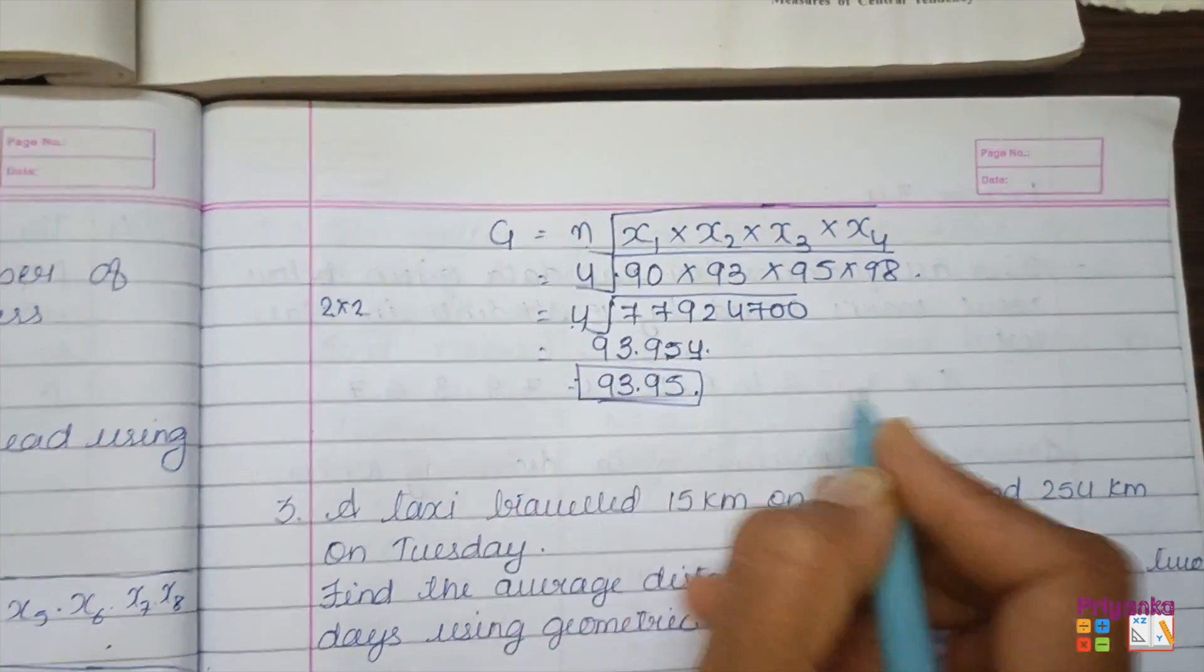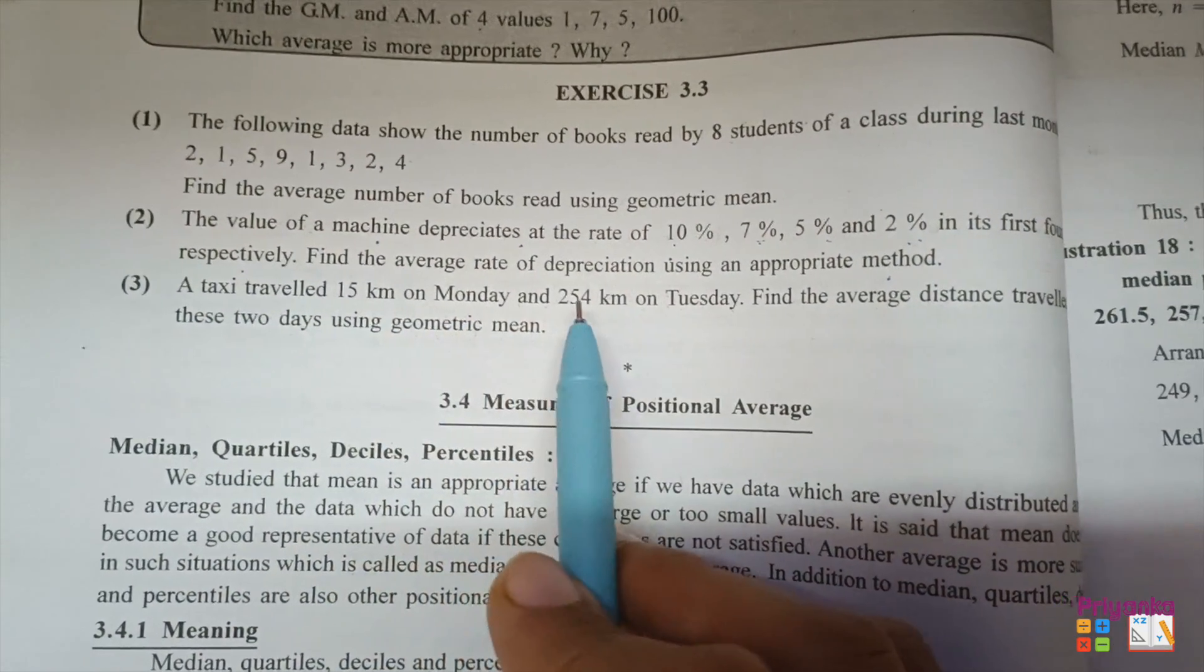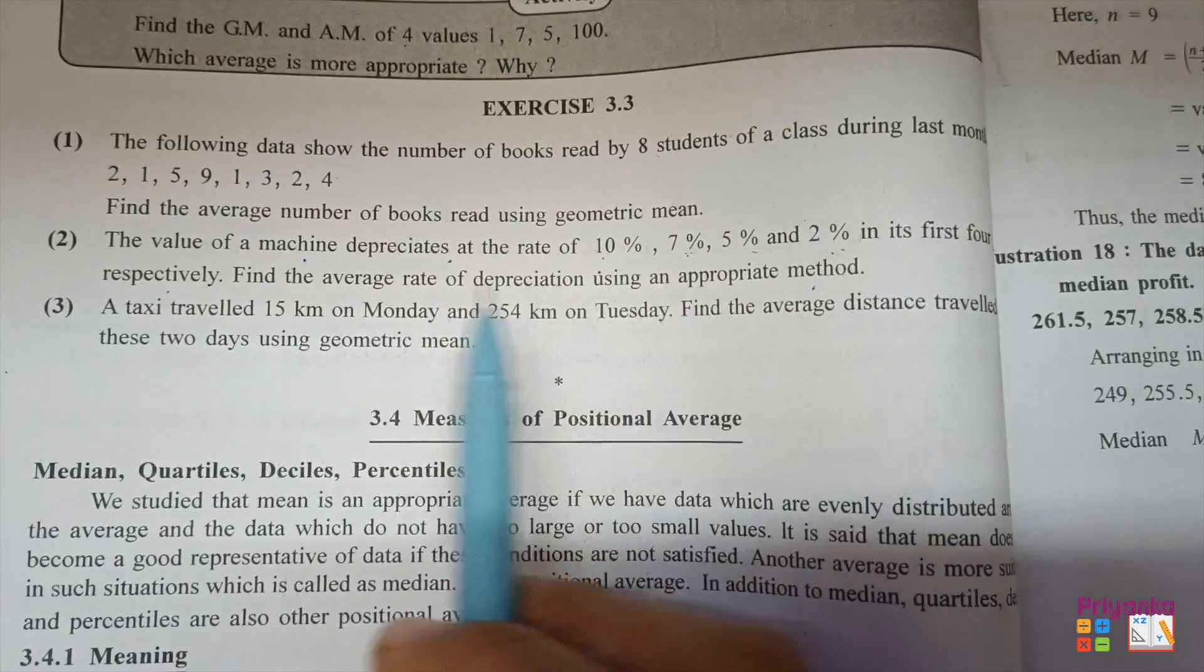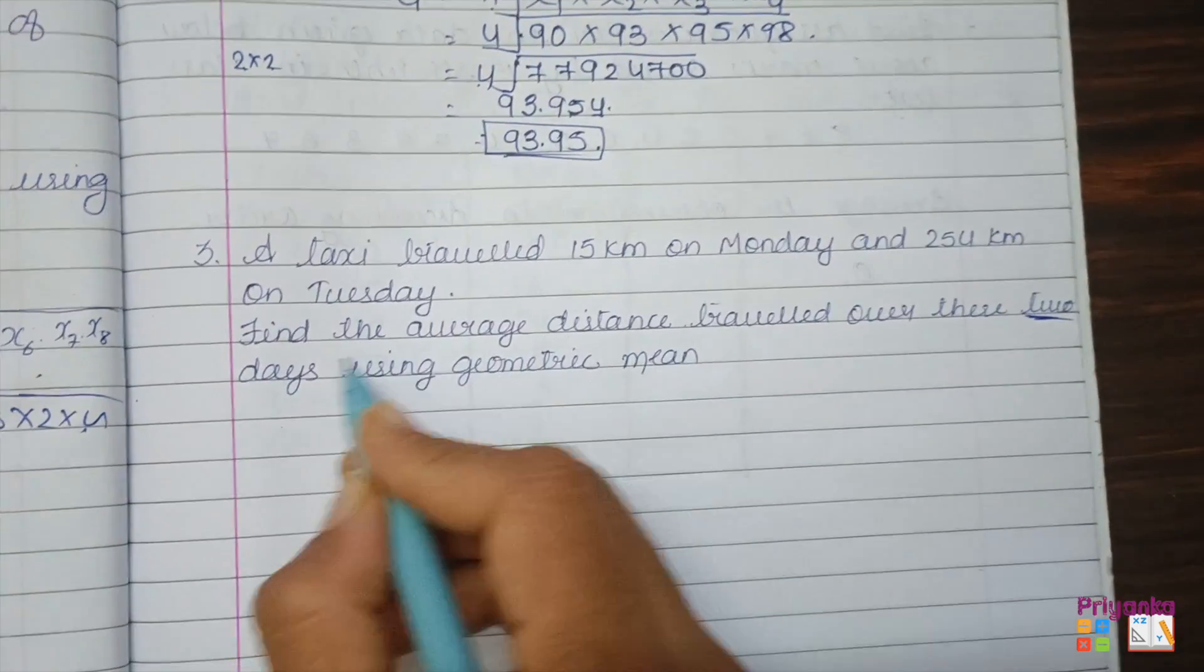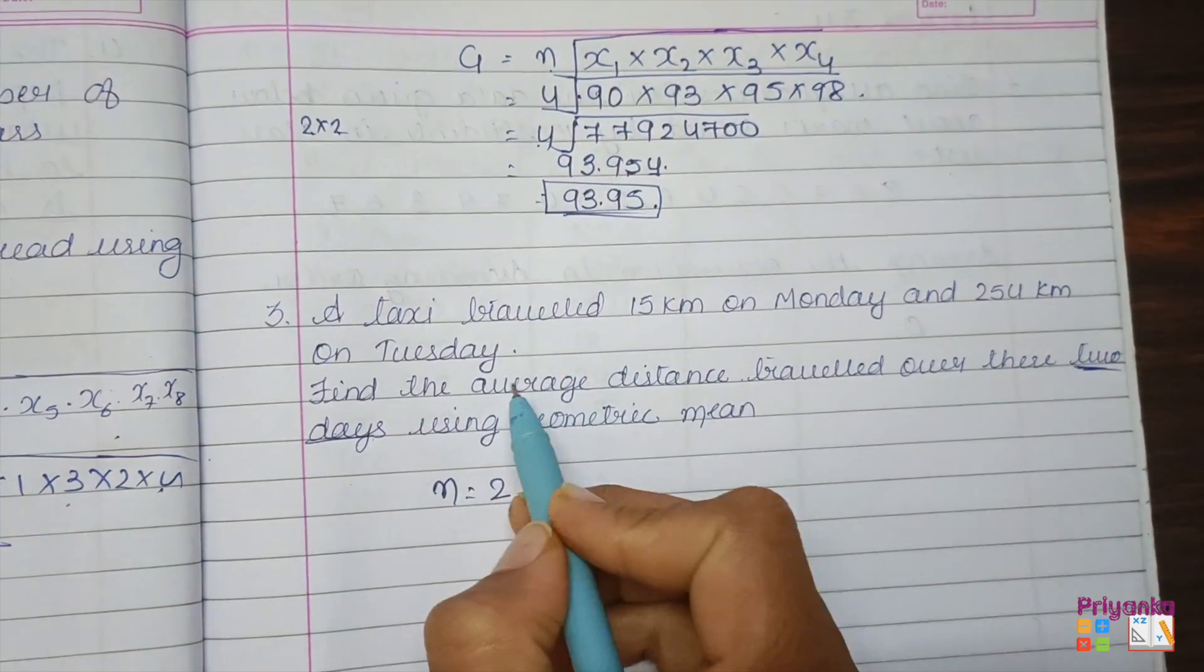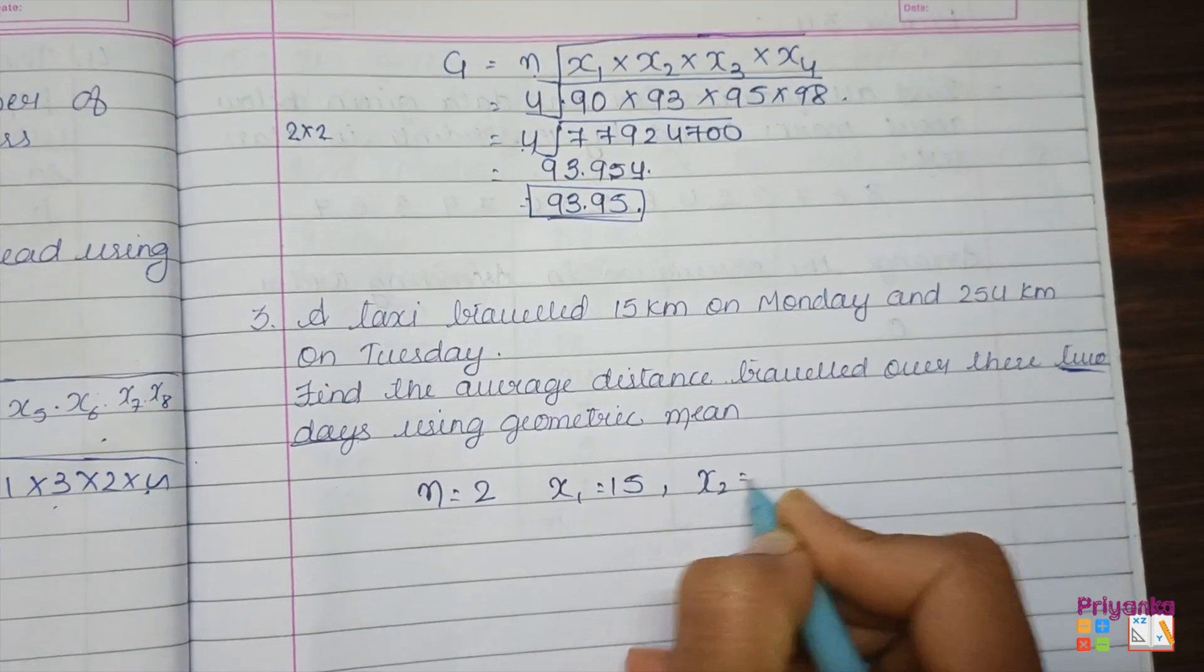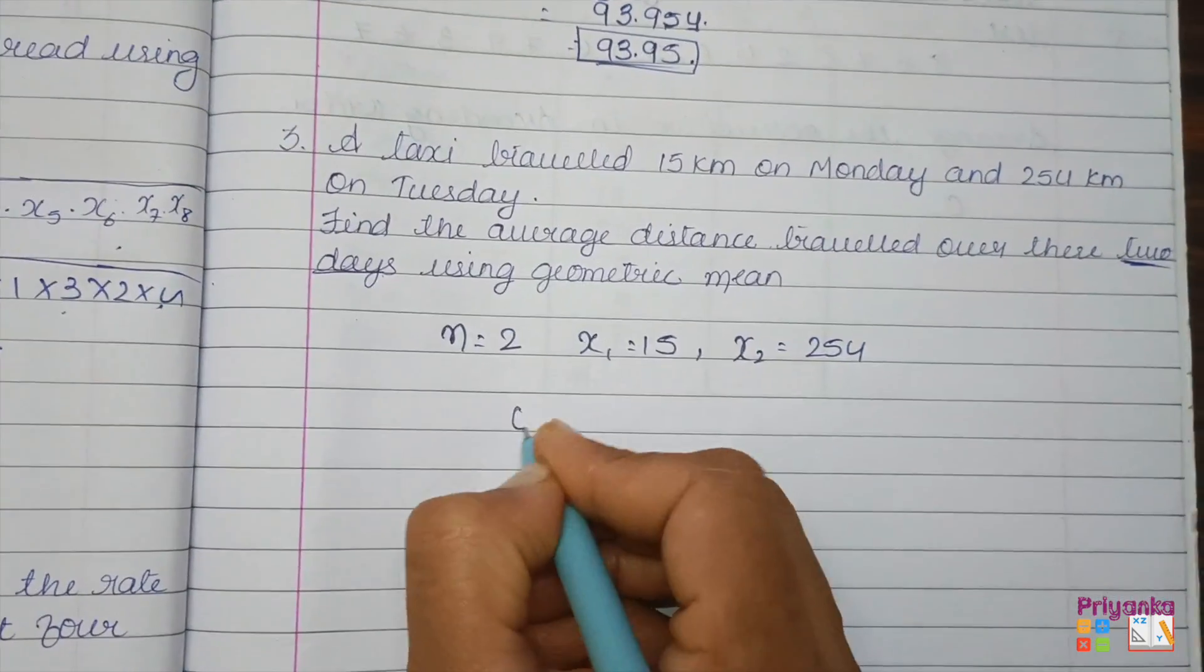Now that's what the answer for this question. Next, question number 3: A taxi traveled 15 km on Monday and 254 km on Tuesday. Find the average distance traveled these 2 days using geometric mean. Now out of this information, when it is talking about the 2 days, that means n is equal to 2, and the information of the traveling kilometers: x₁ will be 15 and x₂ will be 254. Let's skip into the formula to find out the geometric mean.